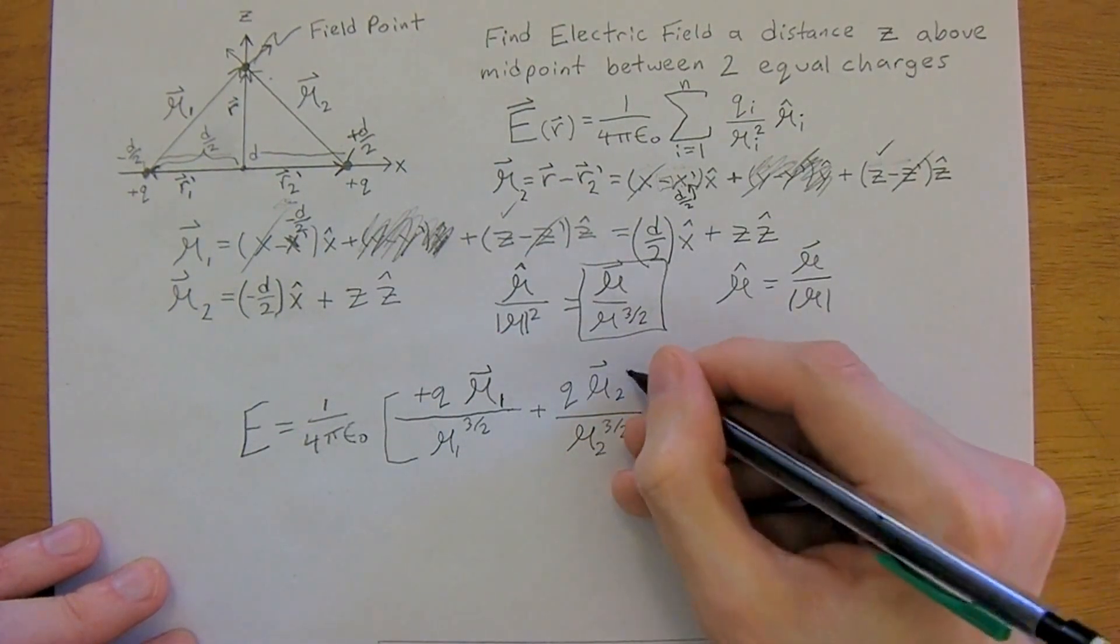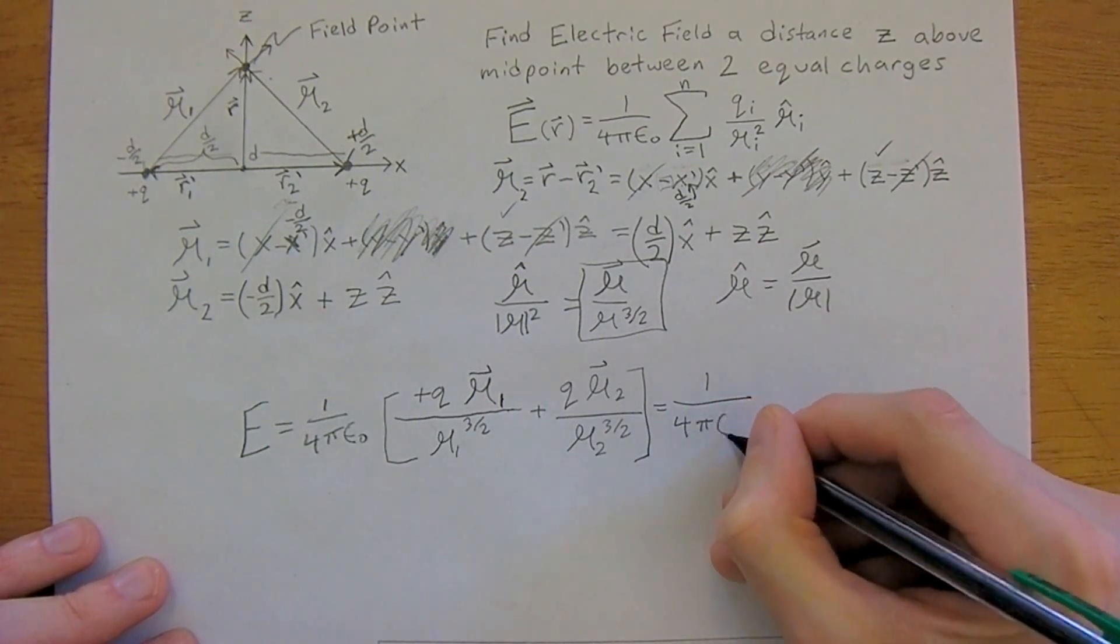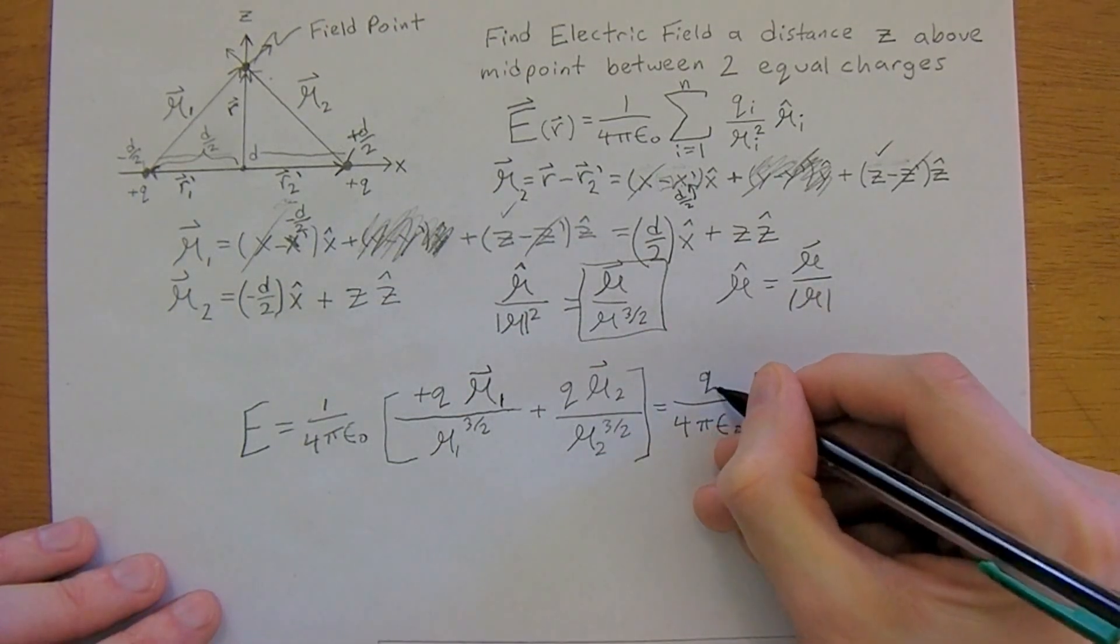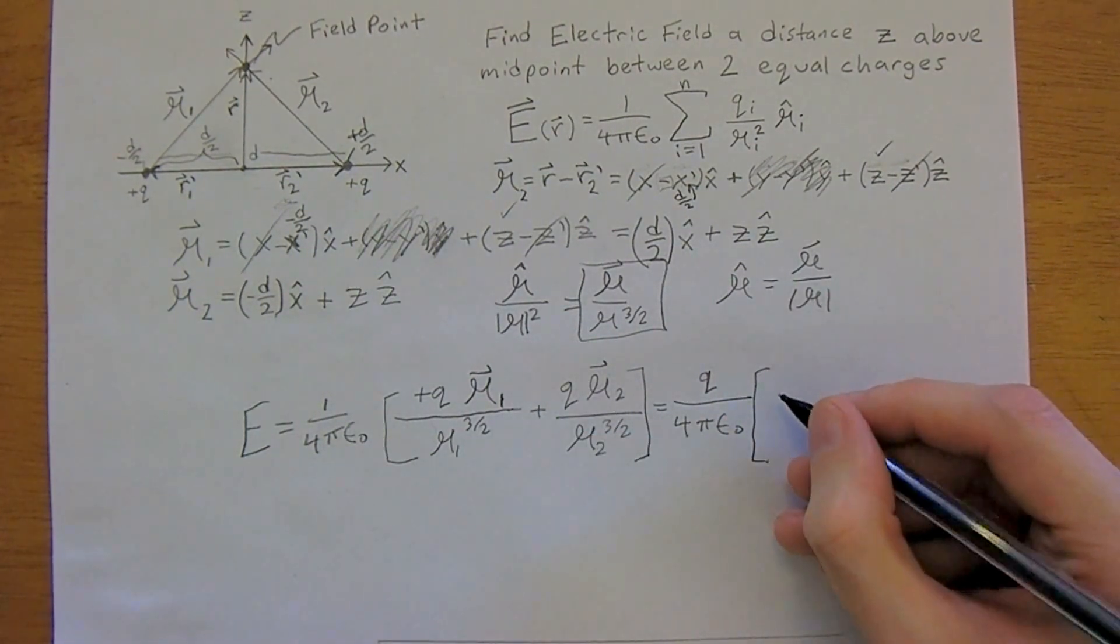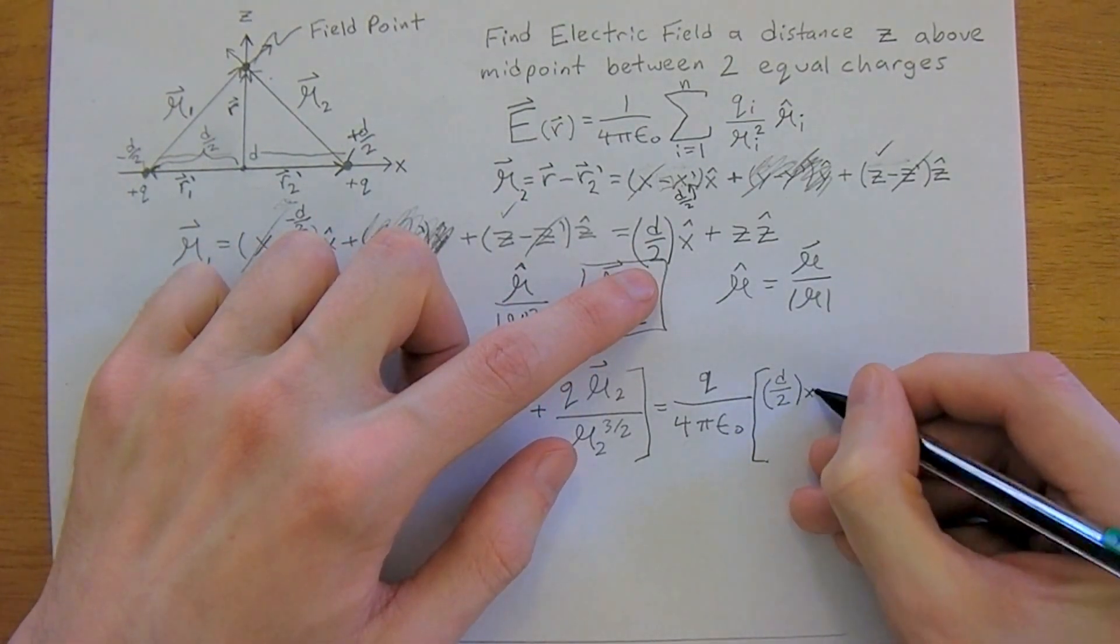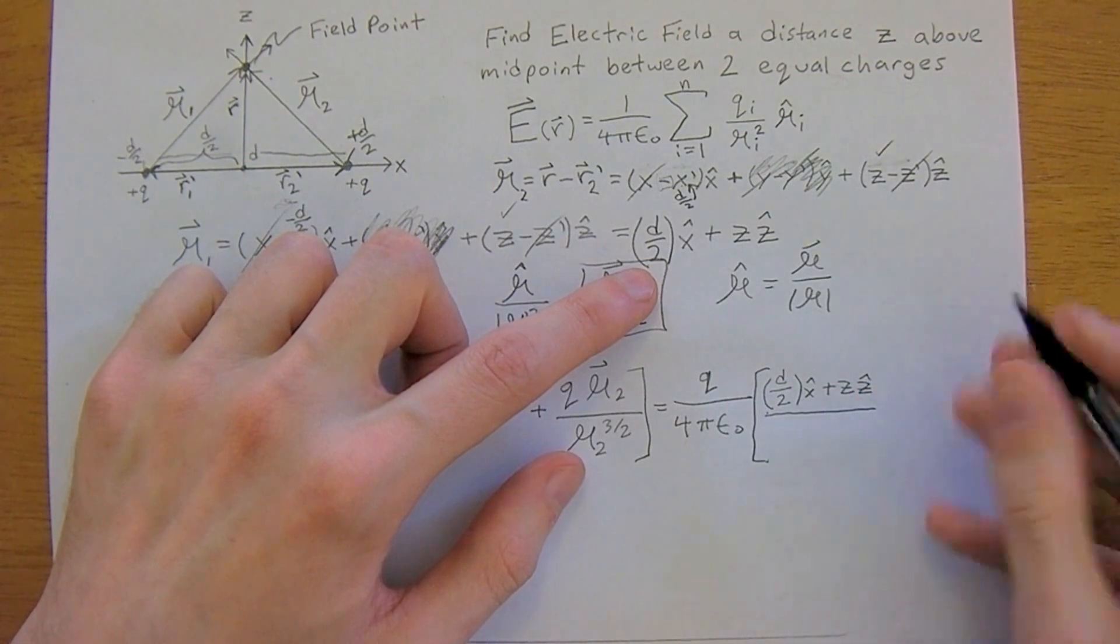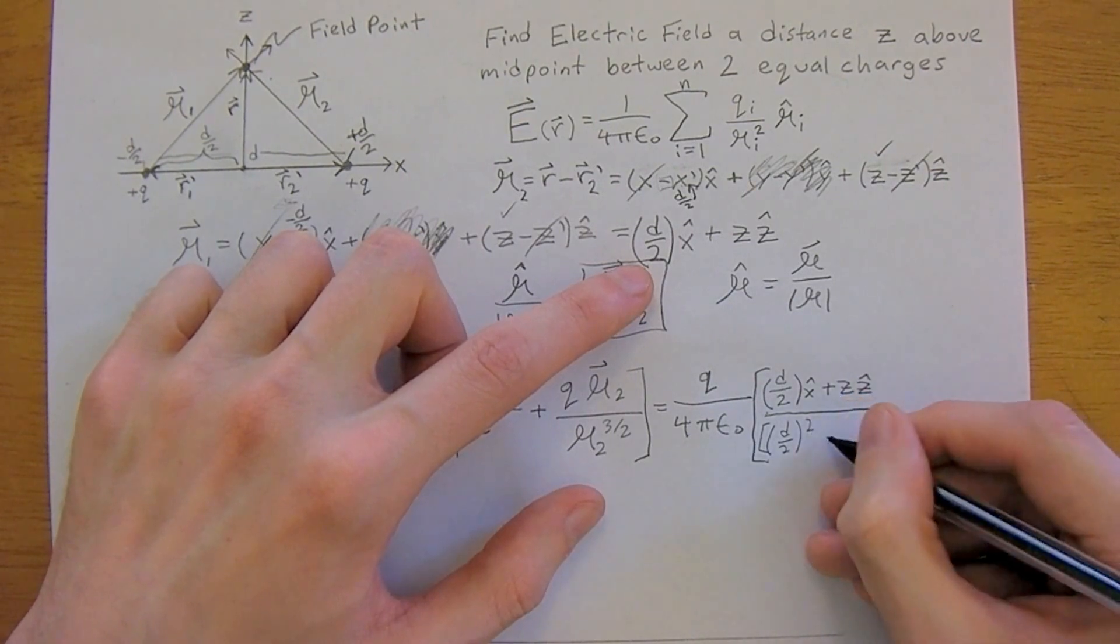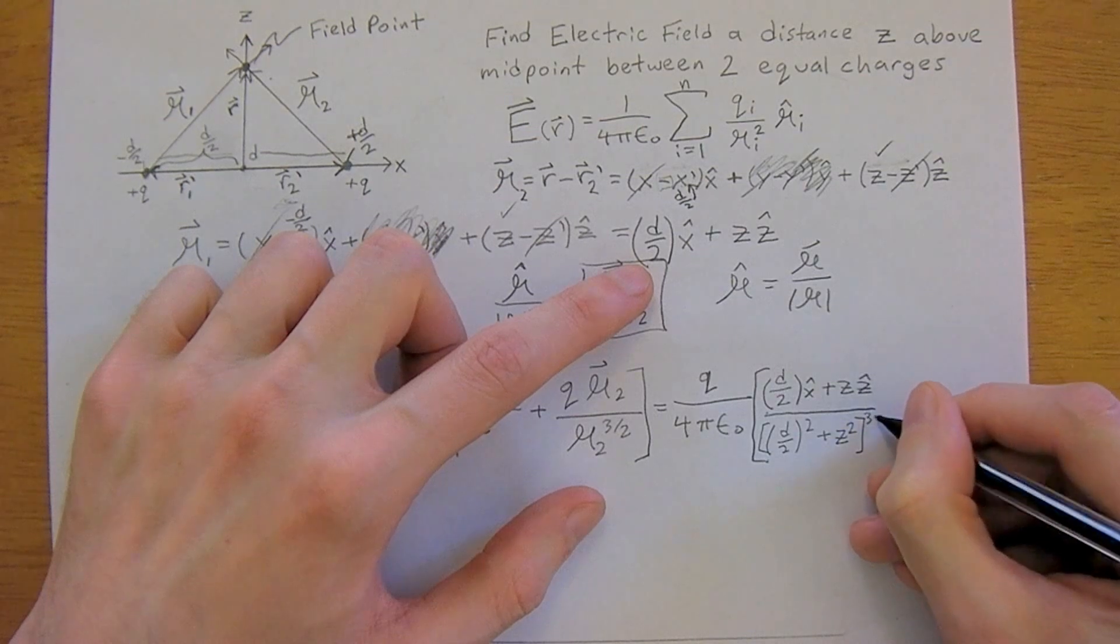So this is equal to 1 over 4 pi epsilon 0, times, and we can actually pull the q's out, because they have the same, the charge has the same magnitude as both positive q in this case. So we just need to plug in r1 now, which is d over 2 x hat plus z z hat, all divided by the magnitude of the 3 halves power. So d over 2 squared plus z squared to the 3 halves power.